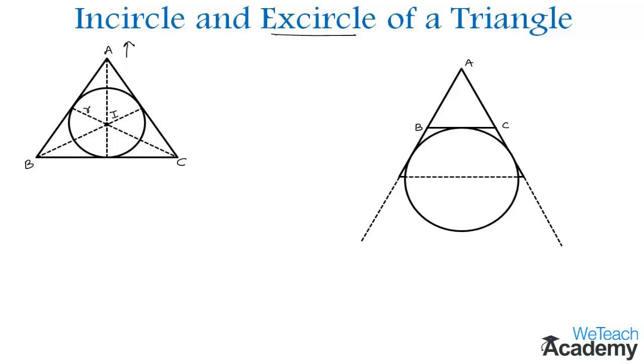We can conclude that every triangle has three distinct excircles, each tangent to one of the triangle's sides. In this case, we have only one incircle.